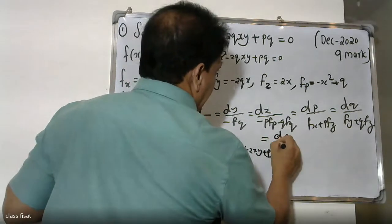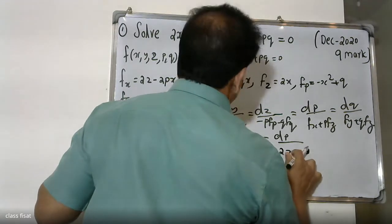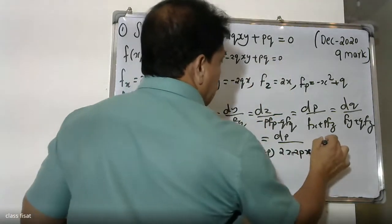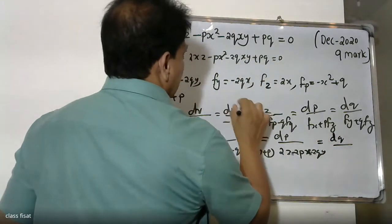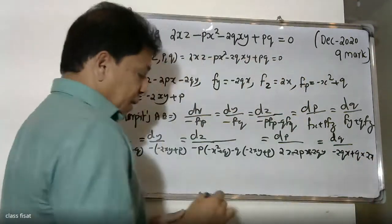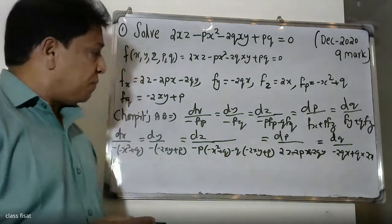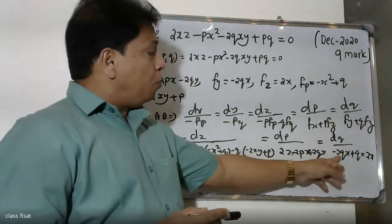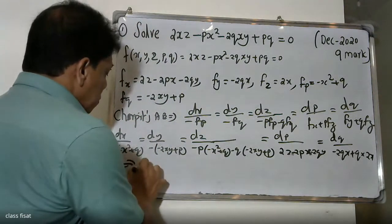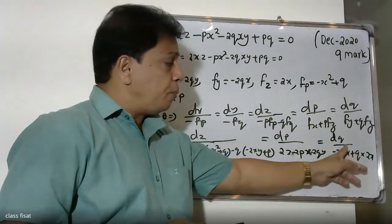Then dp divided by fx: dana fx equals 2z minus 2px minus 2qy. Then dq divided by fy: dana fy equals minus 2qx. So dq divided by minus 2qx plus qx plus qx, then dq divided by fy equals the coefficient. Then considering the last ratio: dq divided by minus 2qx plus 2qx — these cancel out.